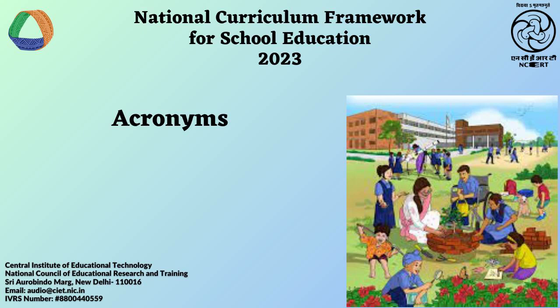26. GRR – Gradual Release of Responsibility. 27. HIIT – High Intensity Interval Training. 28. HPC – Holistic Progress Card. 29. ICDS – Integrated Child Development Services. 30. ICT – Information and Communication Technology. 31. IDA – Interdisciplinary Areas. 32. IEP – Individualized Education Plan. Page 8. 33. ISL – Indian Sign Language.